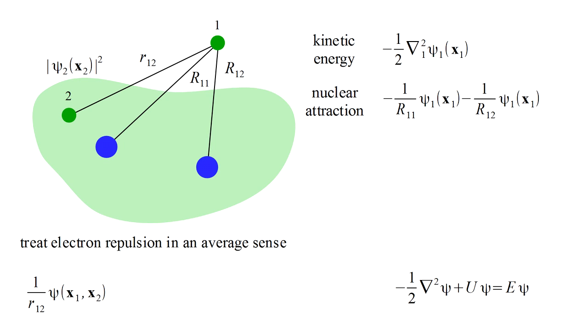We treat electron two as a cloud of electric charge with a charge density given by the magnitude squared of the second orbital wave function.